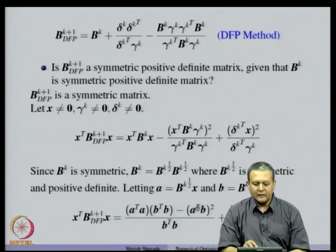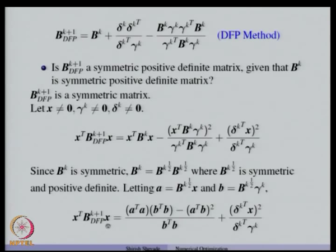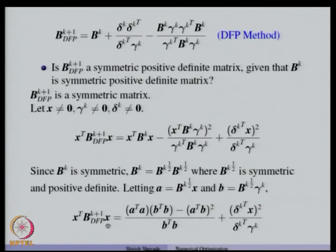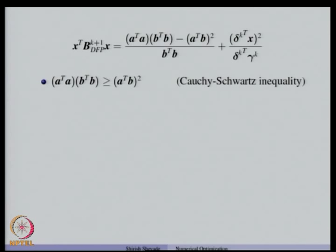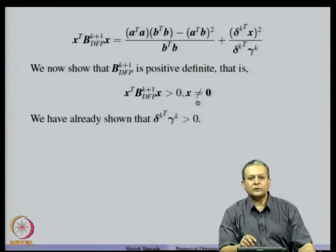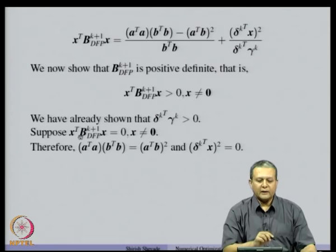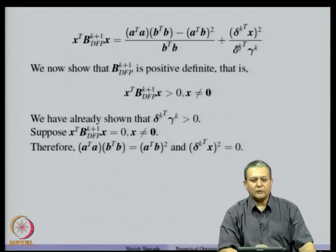We then looked at the positive definiteness of this matrix. We first showed that this matrix is positive semi-definite — the numerator is non-negative due to the Cauchy-Schwarz inequality, and this quantity is also non-negative because of the Cauchy-Schwarz inequality. So we saw that xᵀ·B_{k+1}·x ≥ 0, and then moved on to show that it is indeed a positive definite matrix. For that, we took a non-zero x and assumed xᵀ·B_{k+1}·x = 0, which means both non-negative quantities sum to zero, so each must be zero.